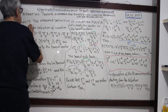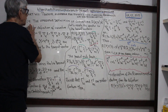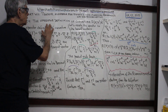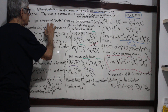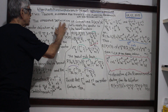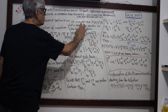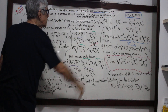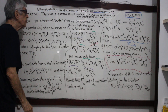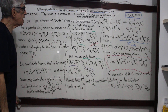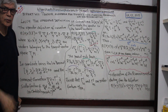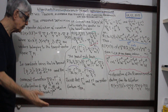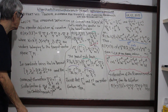Lecture 29, the curvature operator. The definition of the curvature R(x, y, z), where x, y, z are vectors which belong to the tangent vector space.